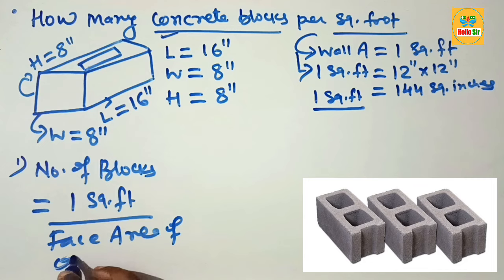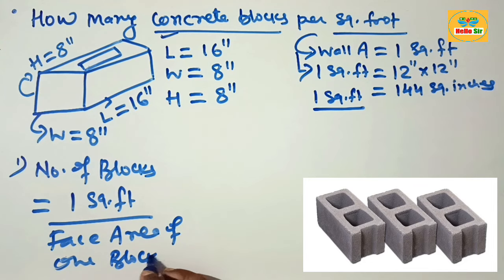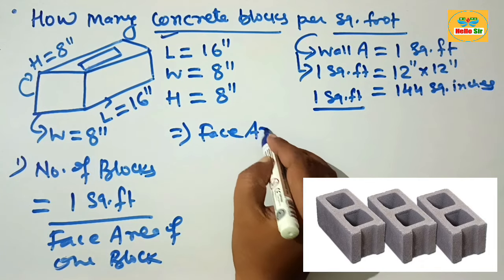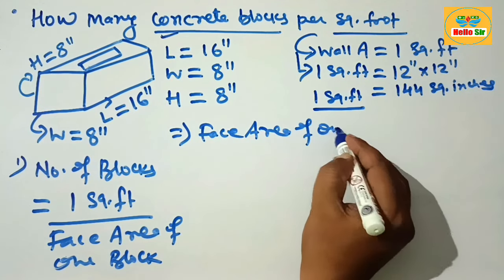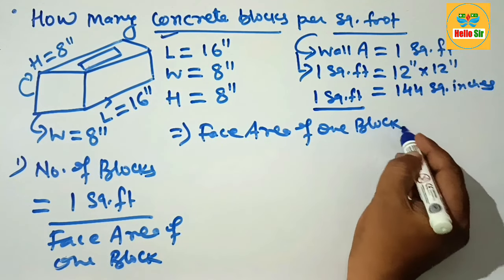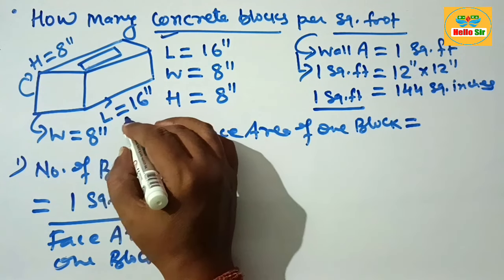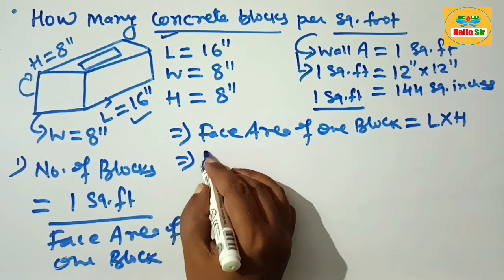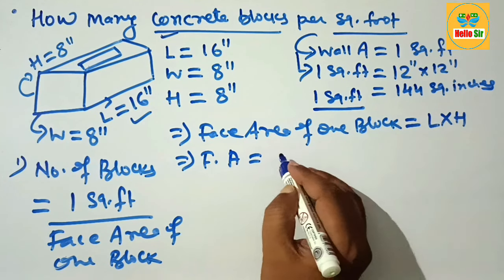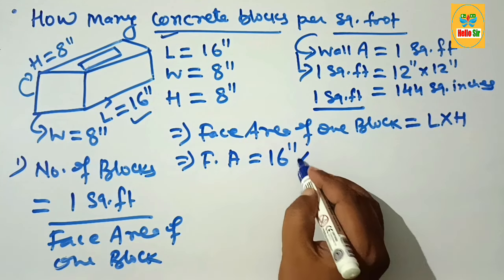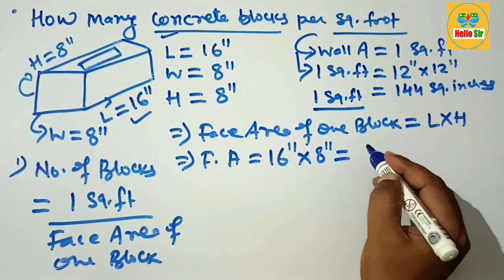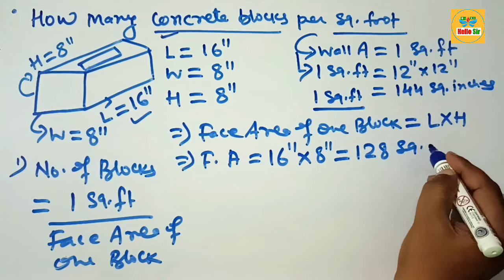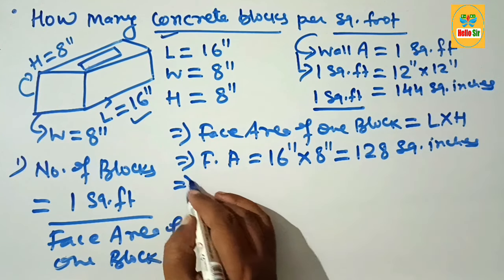Now calculate the face area of one block. The face area is calculated by multiplying the length by the height of the block. The length is 16 inches and the height is 8 inches. Multiplying these together gives 128 square inches.